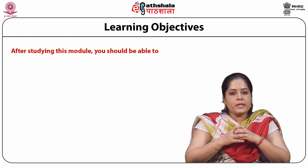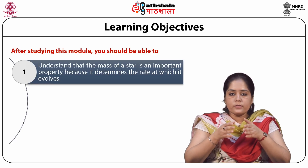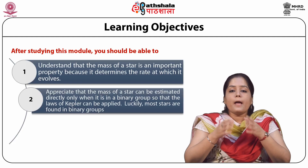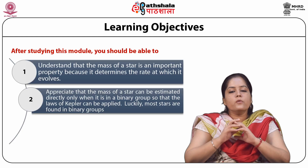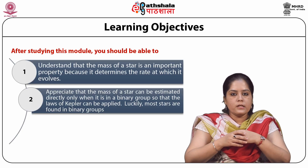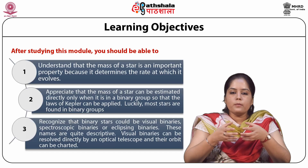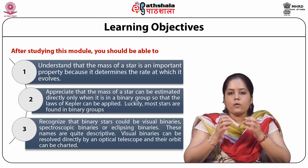After studying the module, you will be able to understand that the mass of a star is an important property because it determines the rate at which it evolves. You will appreciate that the mass of a star can be estimated directly only when it is in a binary group, so that the laws of Kepler can be applied. Luckily, most stars are found in binary groups. You will also recognize that binary stars could be visual binaries, spectroscopic binaries, or eclipsing binaries — these names are quite descriptive.